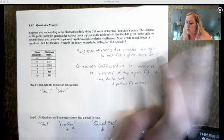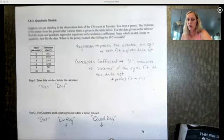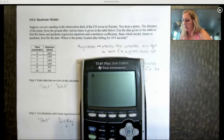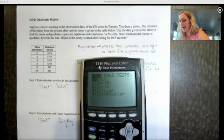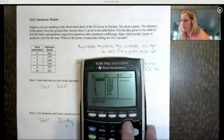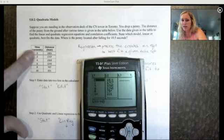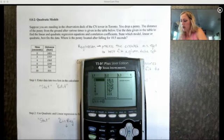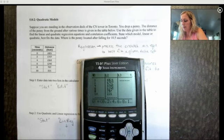What we're going to do is enter this data into our graphing calculator. I've already done it but I'm going to show you how. You go to stat and then edit. You can enter in these lists. I put the time in list one and the distance in list two. To clear a list you just go up to the top and hit clear enter.